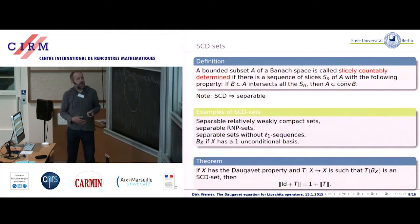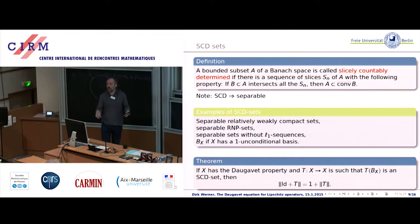What is the relation to the Daugavet business? If you have an operator on a space with a Daugavet property such that its image, the image of the unit ball, has the property above, then the Daugavet equation holds. This contains all the previous examples because, as you can see from the examples here, weakly compact sets and hence weakly compact operators satisfy these assumptions, RNP operators, L1 singular operators. Therefore this is kind of the theorem that contains all the previous examples as special cases.